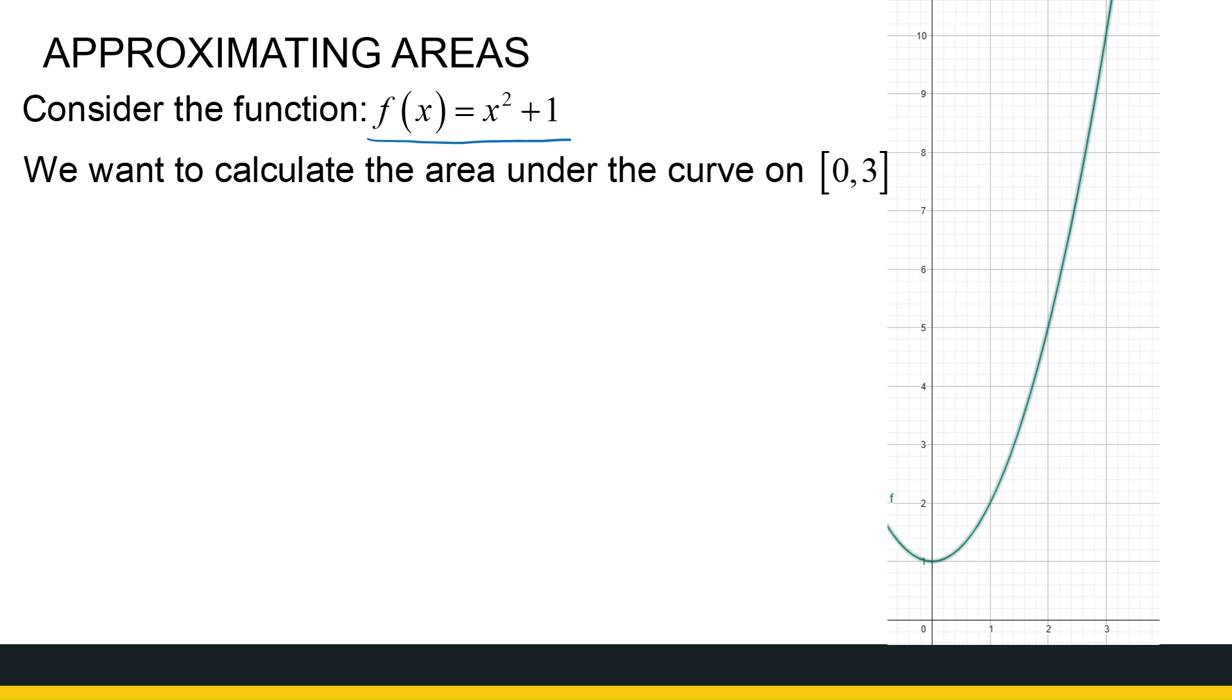So a good idea with the tools we currently have, if I want to know what the area under the curve is, the areas that I'm able to calculate very easily are areas of rectangles. So if I take that area under the curve from 0 to 3, and I divide it into 3 blocks, from 0 to 1, 1 to 2, 2 to 3. So 3 partitions.